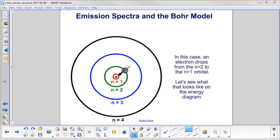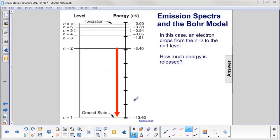Start with this case. We have an electron in the n equals 2 level, and it drops from this orbital to the n equals 1 orbital. Let's see what that looks like on the energy diagram. The energy level diagram, here's n equals 2 at an energy of negative 3.40 eV, and that drops down to the ground state of negative 13.60 eV. How much energy is released?